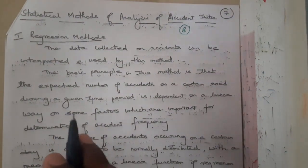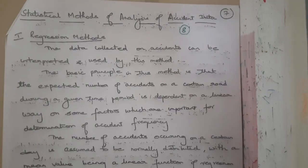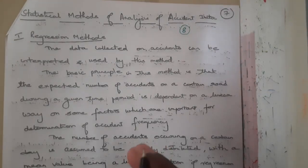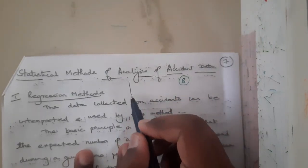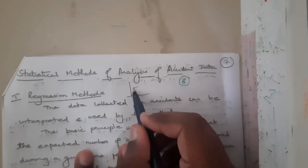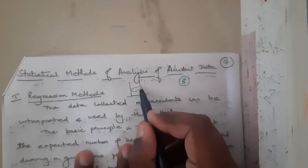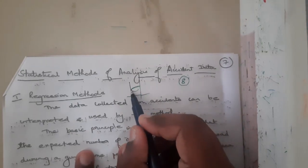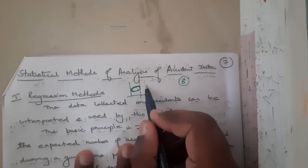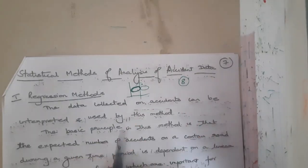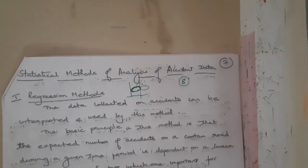The first method is the regression method. In simple words, linear regression or any kind of regression is where you observe the previous values, do some mathematical calculations, and predict the future values. This concept is nothing but regression.